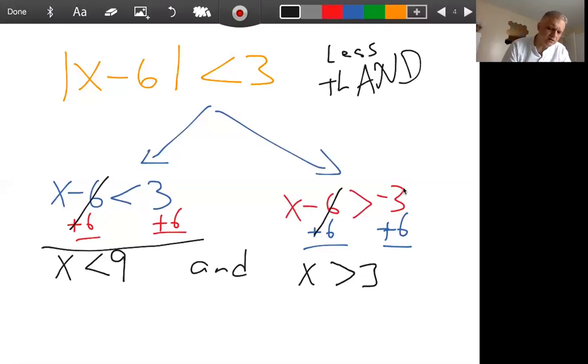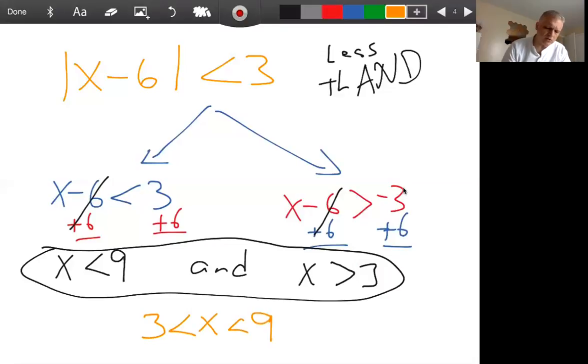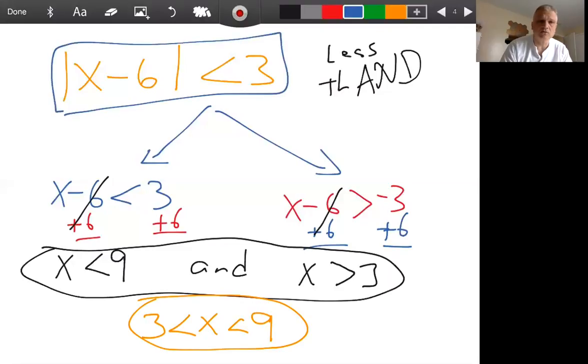So you can just type that into ALEKS. Or you could take the smaller number and X and the larger number. You can say, okay, X is greater than 3 or 3 is less than X, and at the same exact time, X is less than 9. So both of those would give you a correct response for the original question right here. This is the original question in ALEKS.